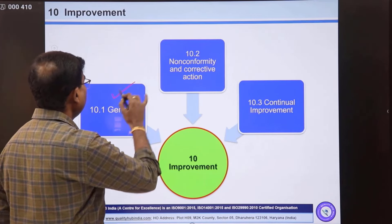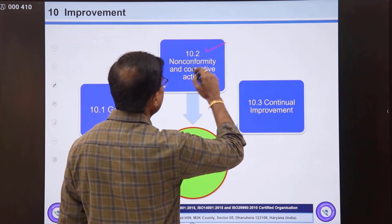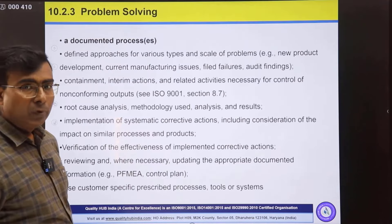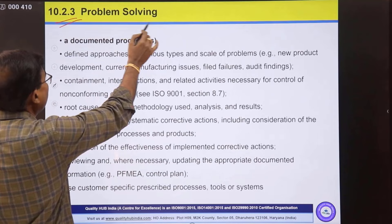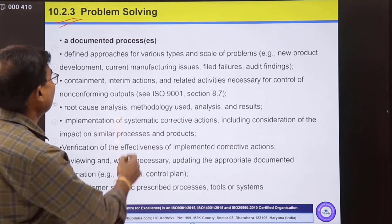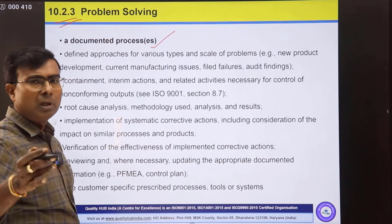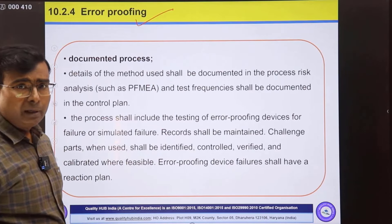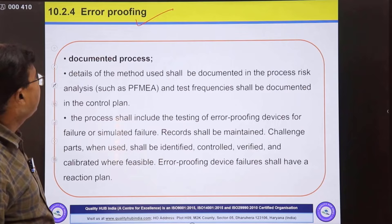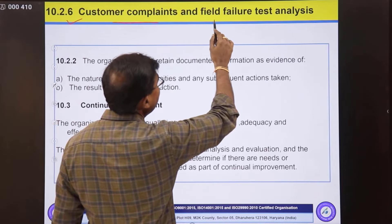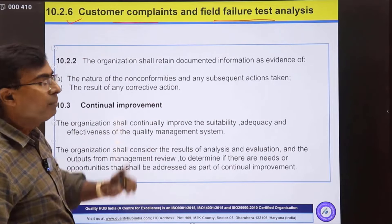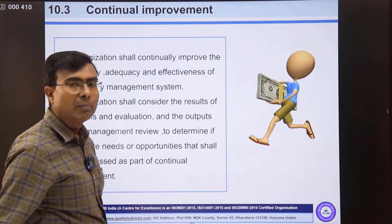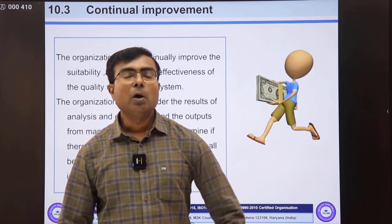Clause ten covers improvement — the last clause — with three sub-clauses. 10.1 covers general requirements. 10.2 covers non-conformity and corrective action. 10.3 covers continual improvement. Sub-clause 10.2.3 requires a documented process for problem solving. 10.2.4 requires a procedure for error proofing, also known as Poka-Yoke. 10.2.6 covers customer complaint handling and field failure test analysis — both exclusive IATF 16949 requirements.